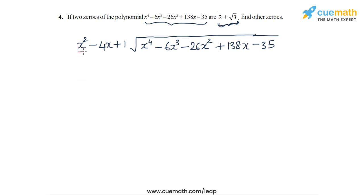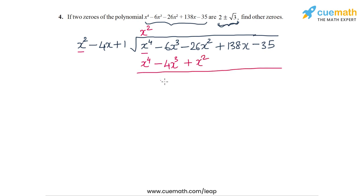In the first step, we need to turn x squared into x to the 4. So the multiplier will be x squared, and this generates the terms x to the 4 minus 4x cubed plus x squared. Subtracting these terms gives minus 2x cubed and minus 27x squared. Bringing down the remaining terms: plus 138x minus 35.